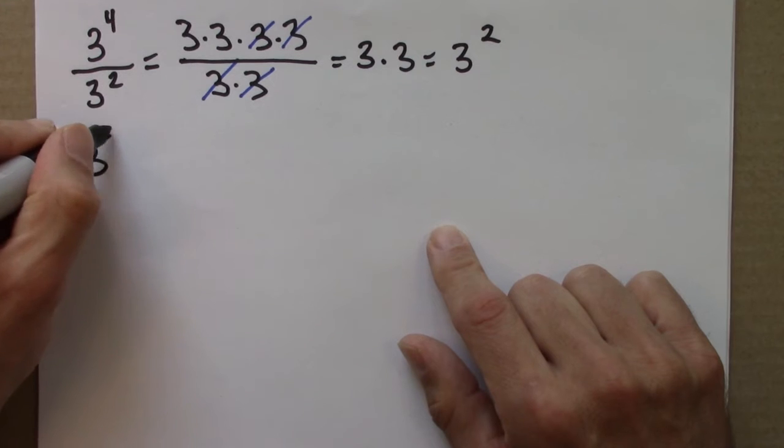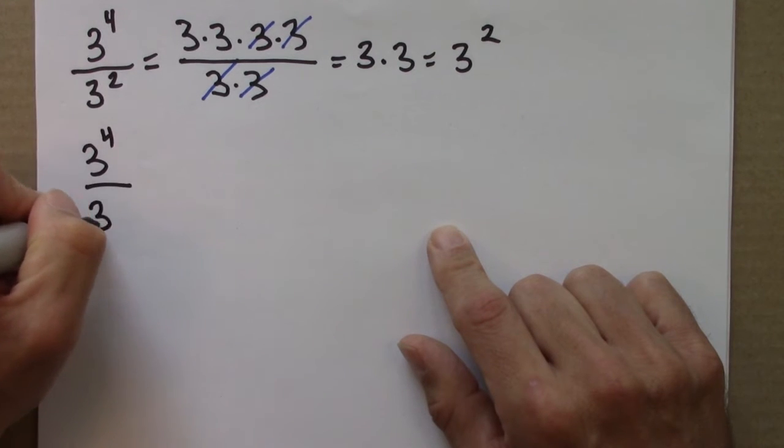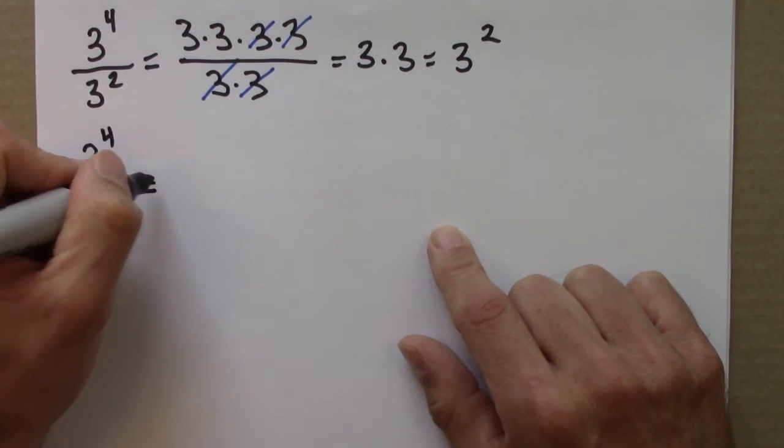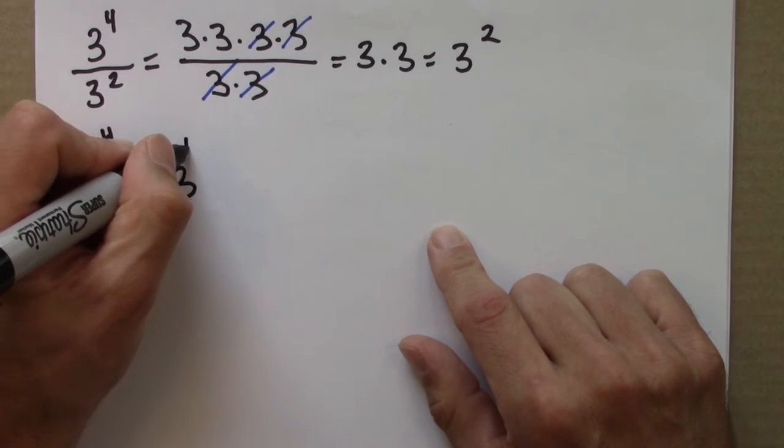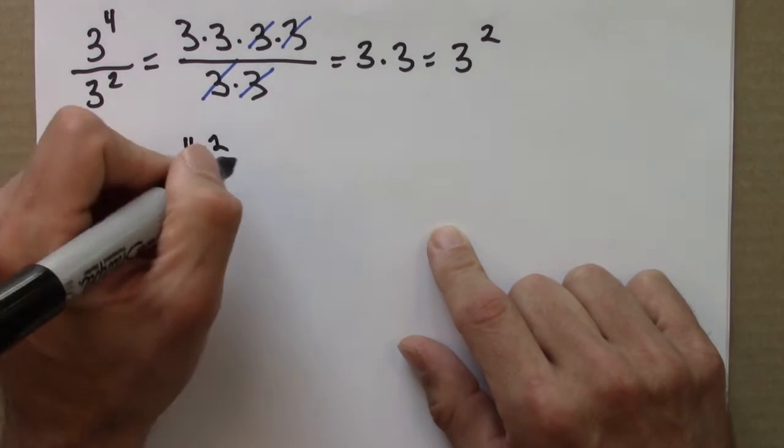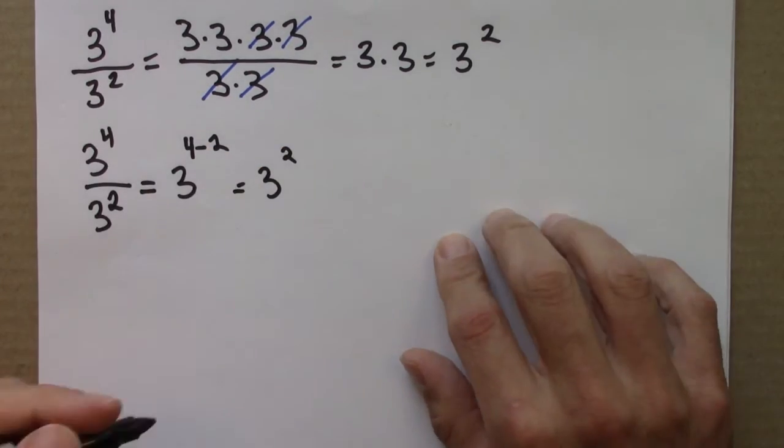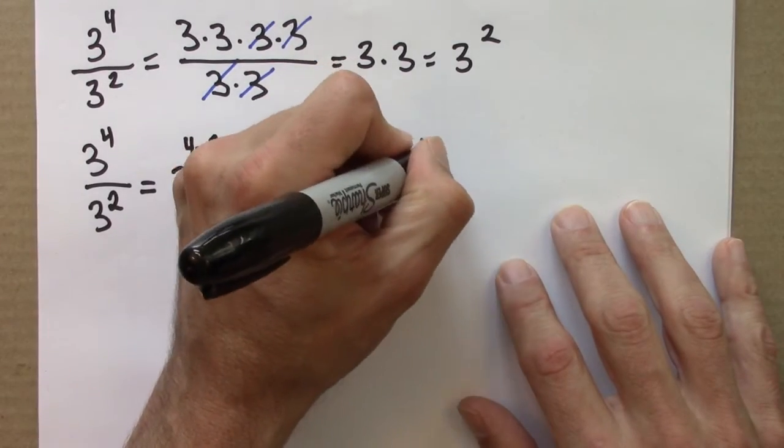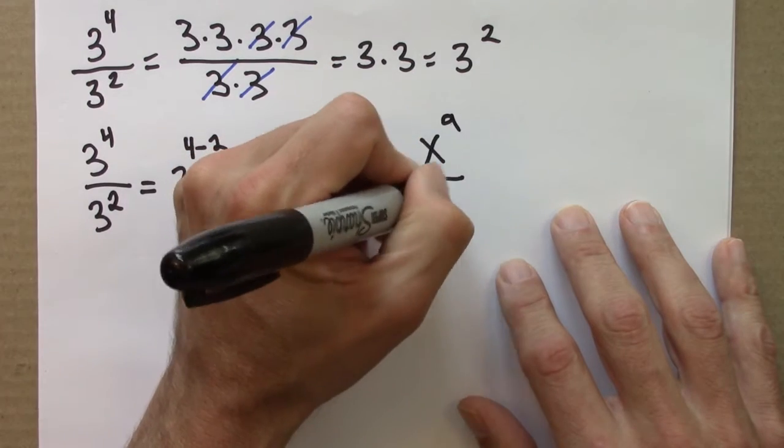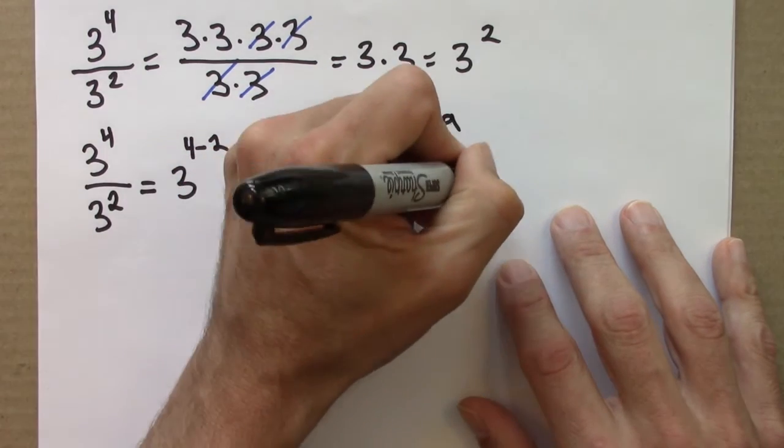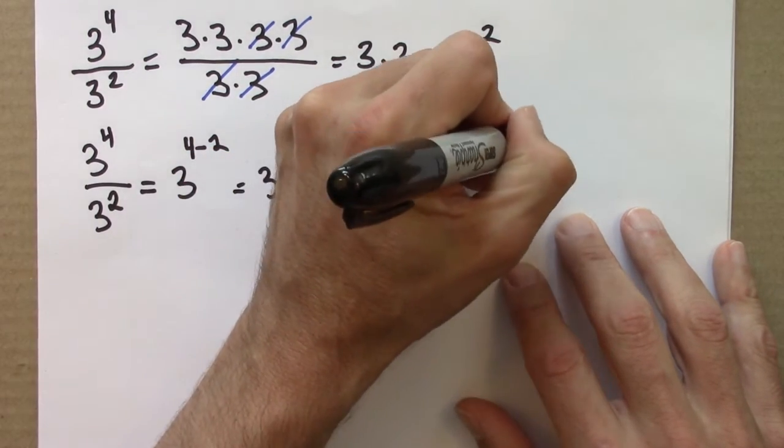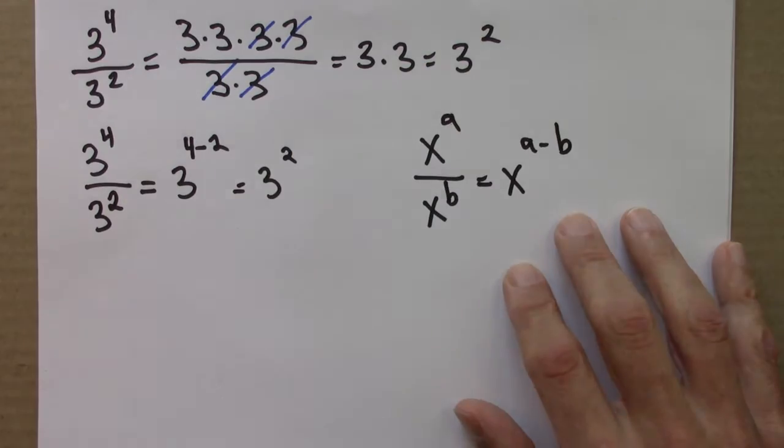So in other words, 3 to the 4 over 3 to the 2 is 3 to the 4 minus 2, which is how we got 3 to the 2. And that gives us another general property: x to the a over x to the b is x to the a minus b.